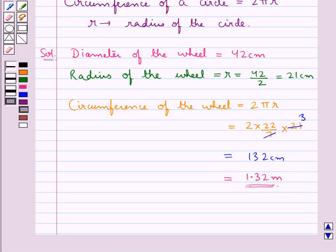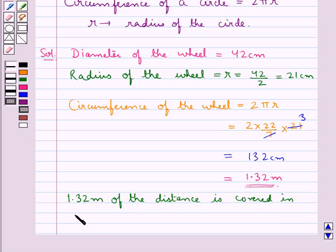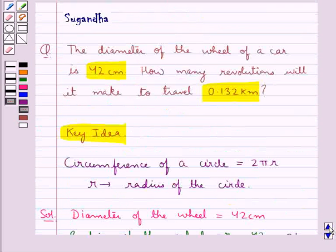We know that in one revolution the wheel covers the distance equal to its circumference. So we say that 1.32 m of the distance is covered in one revolution and we have to find how many revolutions will make it to travel 0.132 km.